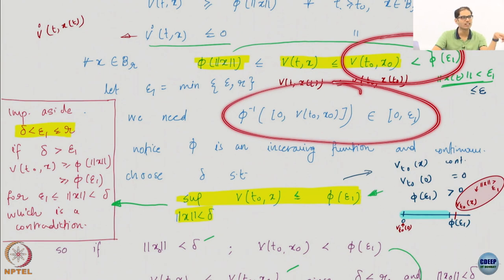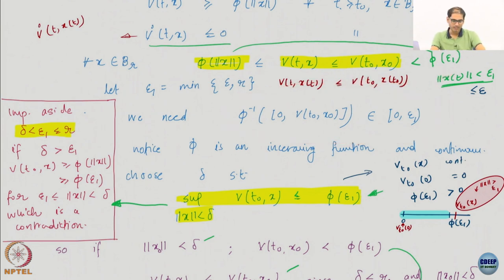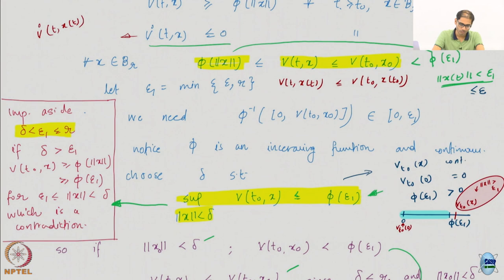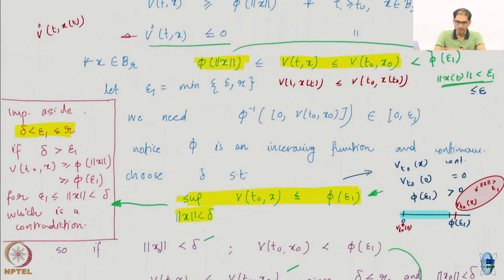Just by taking φ⁻¹ on the left-hand side, because I have to write everything as open sets — these are relative open sets — so things seem complicated. But this is what I want: φ⁻¹ of (0, V(t₀,x₀)) to lie within (0, ε₁). The notion of open and inverse seems a bit murky here, but do not worry, it is not murky — we are talking about relative open sets.